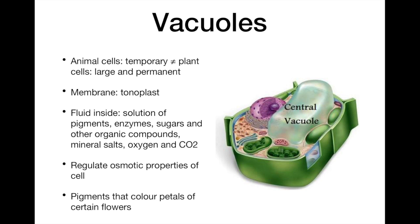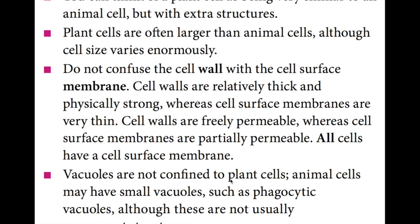Vacuoles help to regulate the osmotic properties of cells, as well as having a wide range of other functions. For example, the pigments which color the petals of certain flowers and parts of some vegetables, such as the red pigments of beetroot, may be located in the vacuoles. Vacuoles are not confined to plant cells. Animal cells may have small vacuoles, such as phagocytic vacuoles, although they're not usually permanent structures. This picture is not mine, and all credits go to the Cambridge University Press.